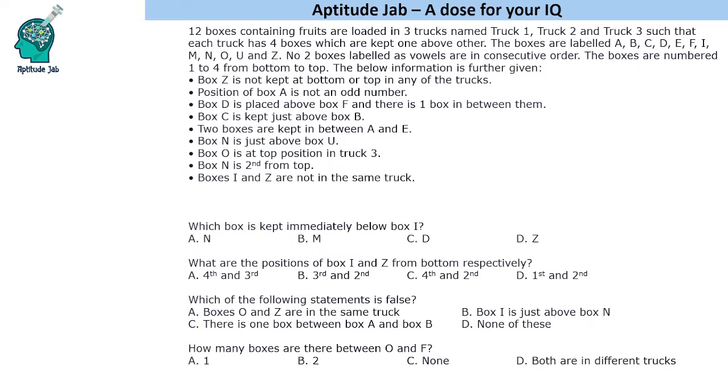These boxes are labelled by different alphabets A, B, C, D, E, F, I, M, N, O, U, Z and one constraint is given that no two boxes labelled as vowels are in consecutive order and some information is given to us.